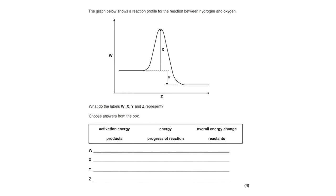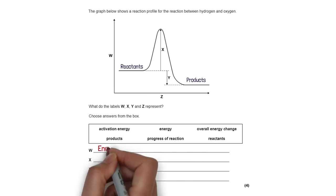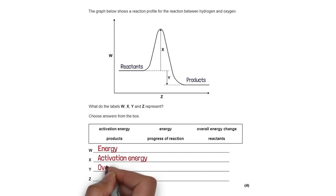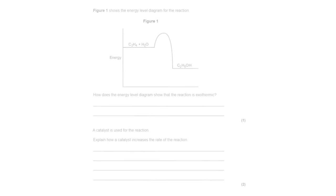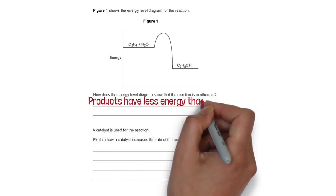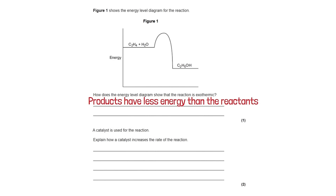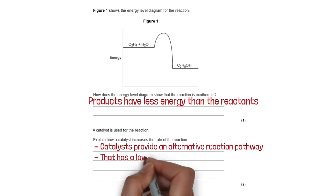A reaction profile for hydrogen and oxygen needs labelling. W is the amount of energy (y-axis), Z is the progress of the reaction (x-axis), X is the activation energy needed to start the reaction, and Y is the overall energy change from reactants to products. Figure 1 shows an exothermic reaction because the products have less energy than the reactants, meaning energy has been lost to the surroundings. A catalyst provides an alternative reaction pathway with a lower activation energy, increasing the rate of reaction.